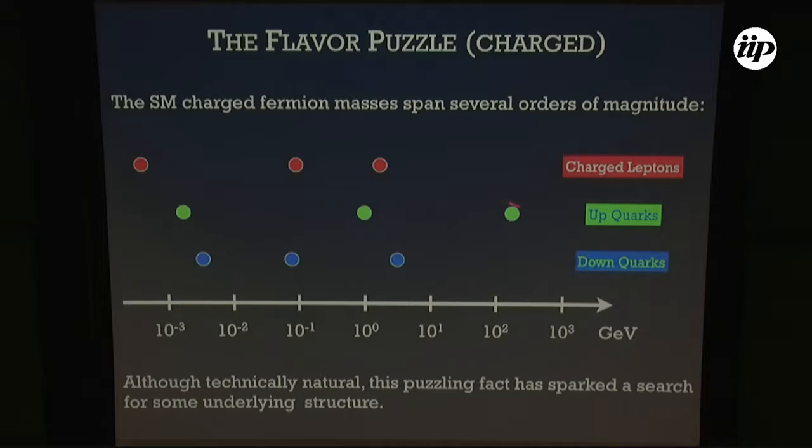So the standard model charged fermion masses span several orders of magnitude, as displayed in this plot. Looking at the charged leptons and the down quarks, they each span roughly three orders of magnitude. The up-type quarks span something like five orders of magnitude.